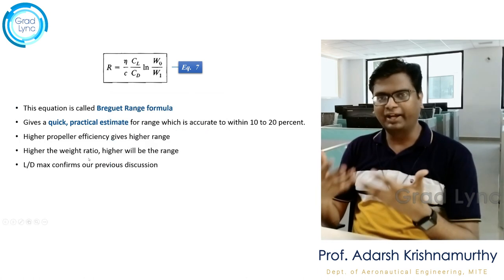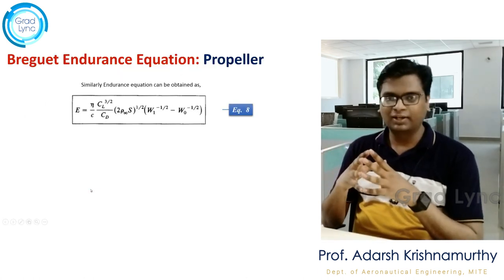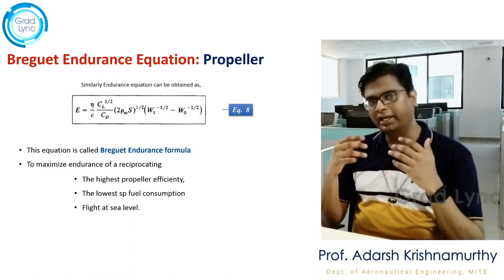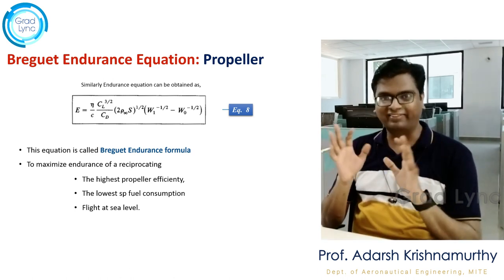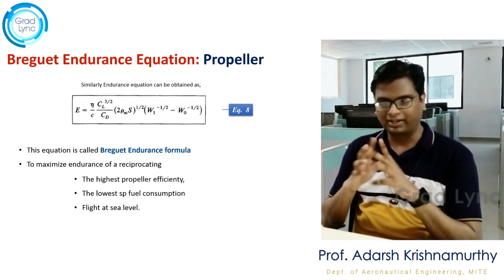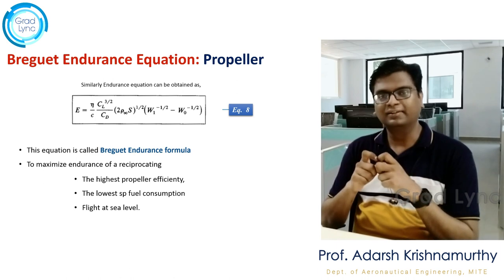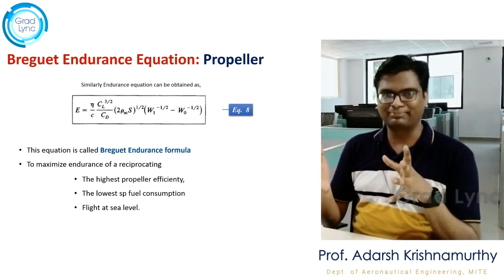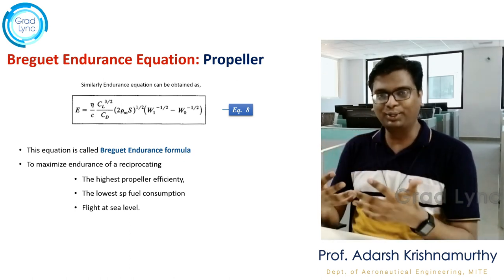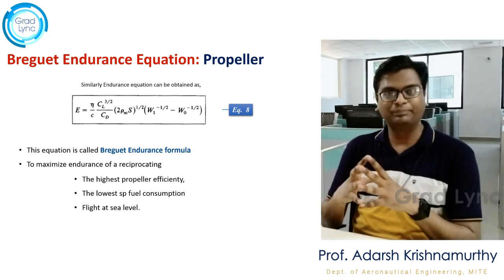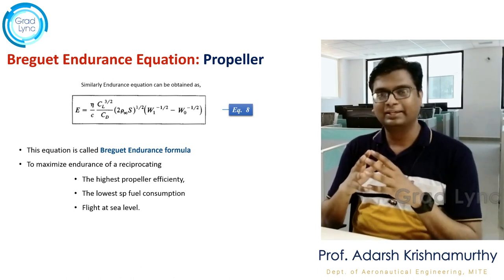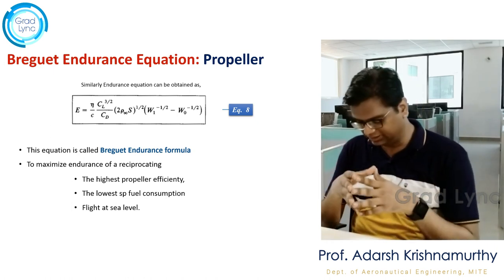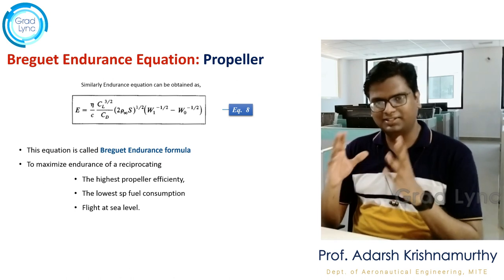We also understood the endurance for propeller aircraft and what parameters it depends on. Apart from other ratios, the endurance also depends on density, whereas range does not depend on density. For a propeller aircraft, maximum range is achieved when CL/CD is maximum, while maximum endurance is achieved when CL^(3/2)/CD is maximum. In both cases, you need to carry a high weight of fuel. Now we will apply the same principles for jet aircraft.